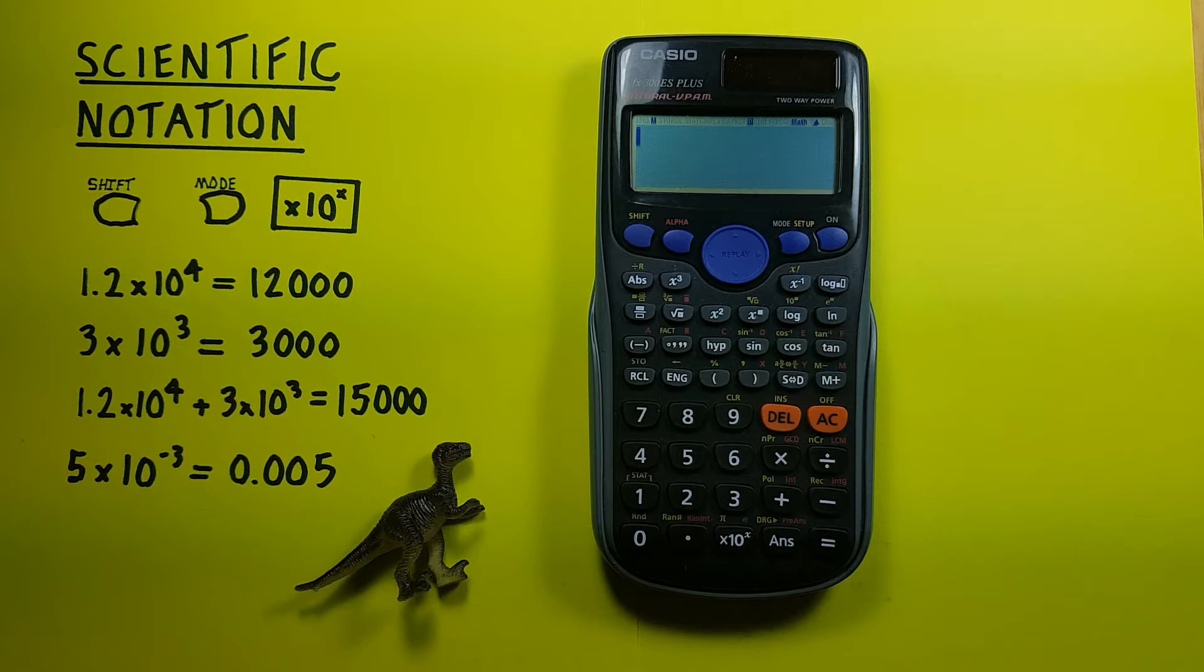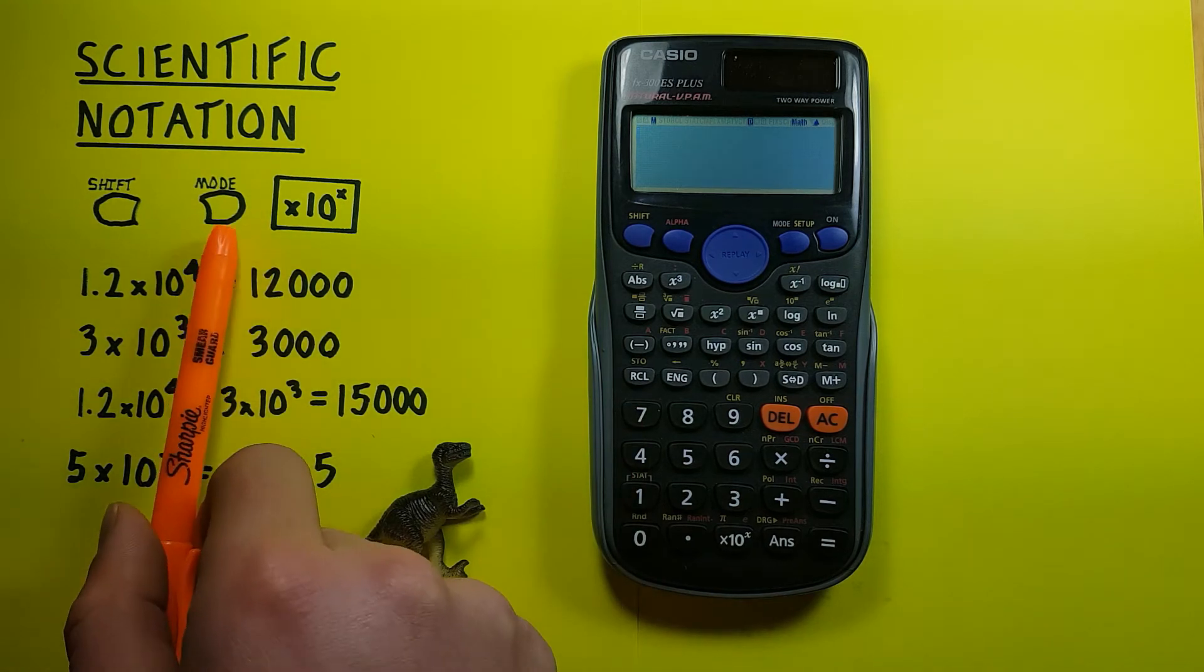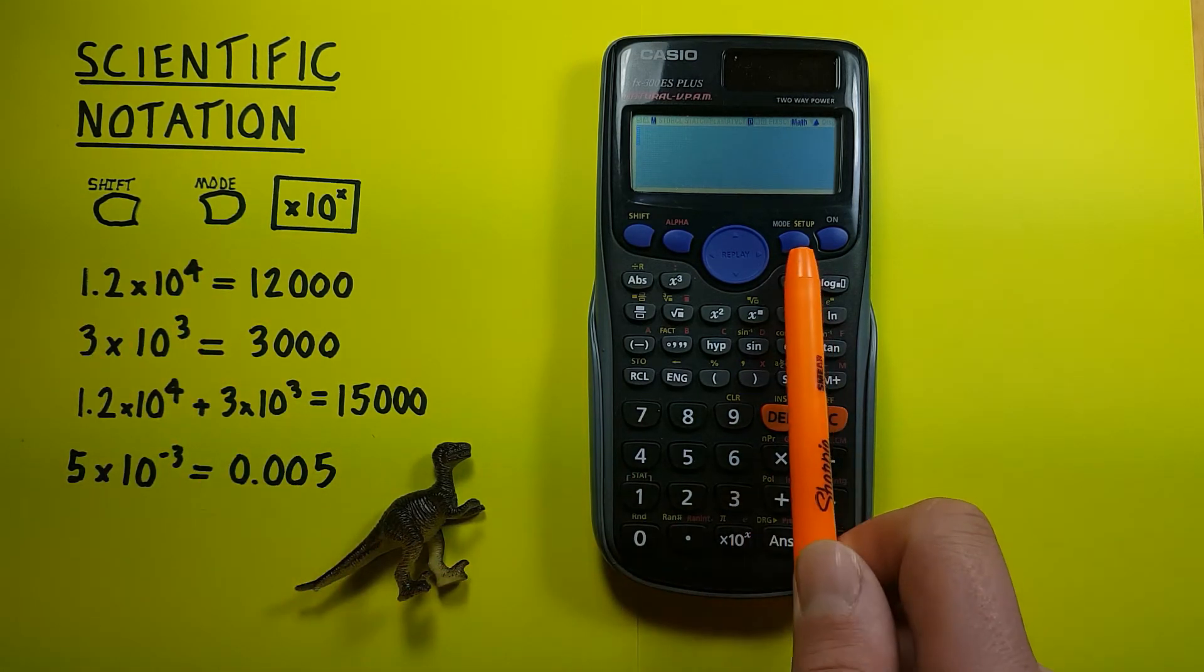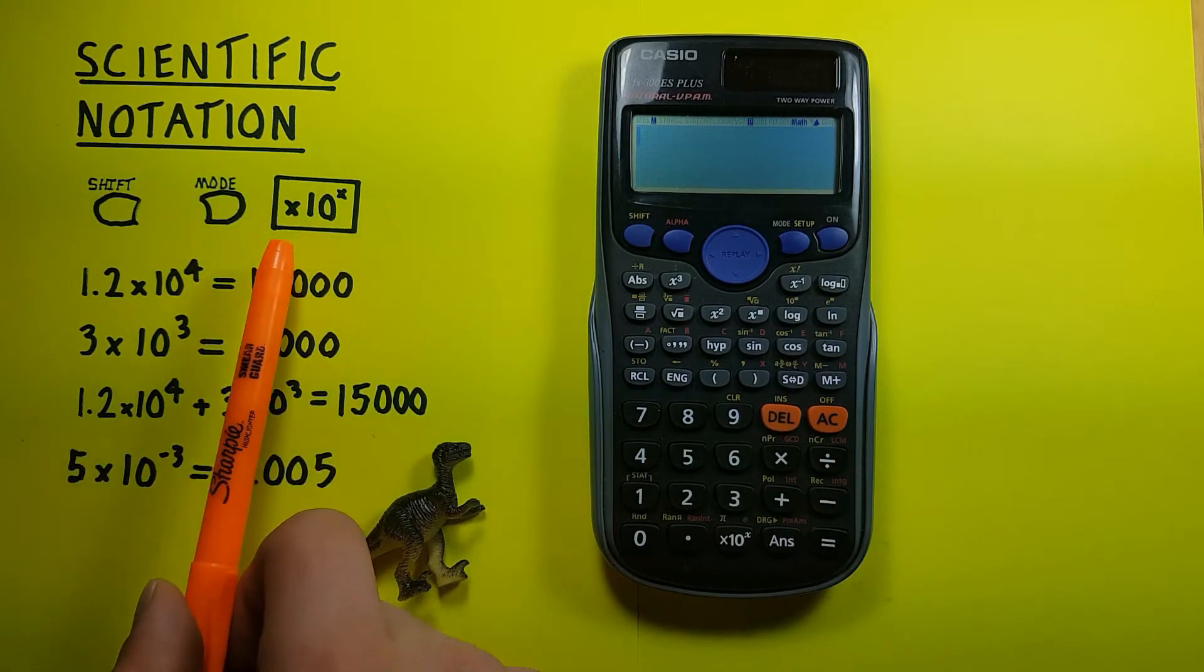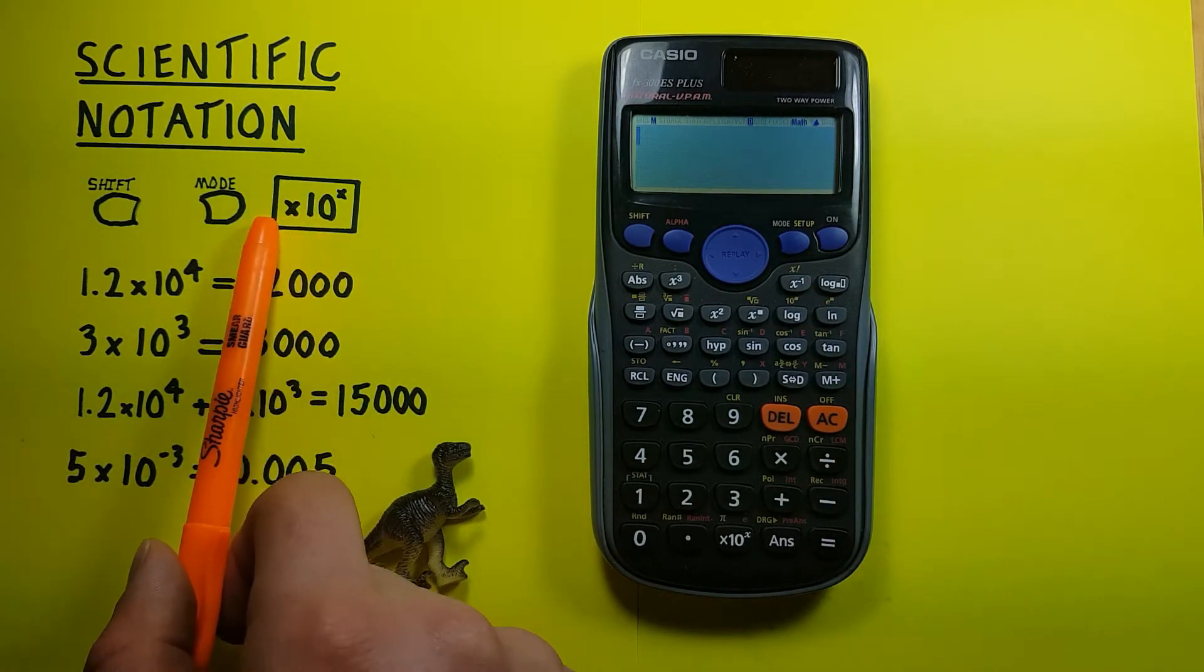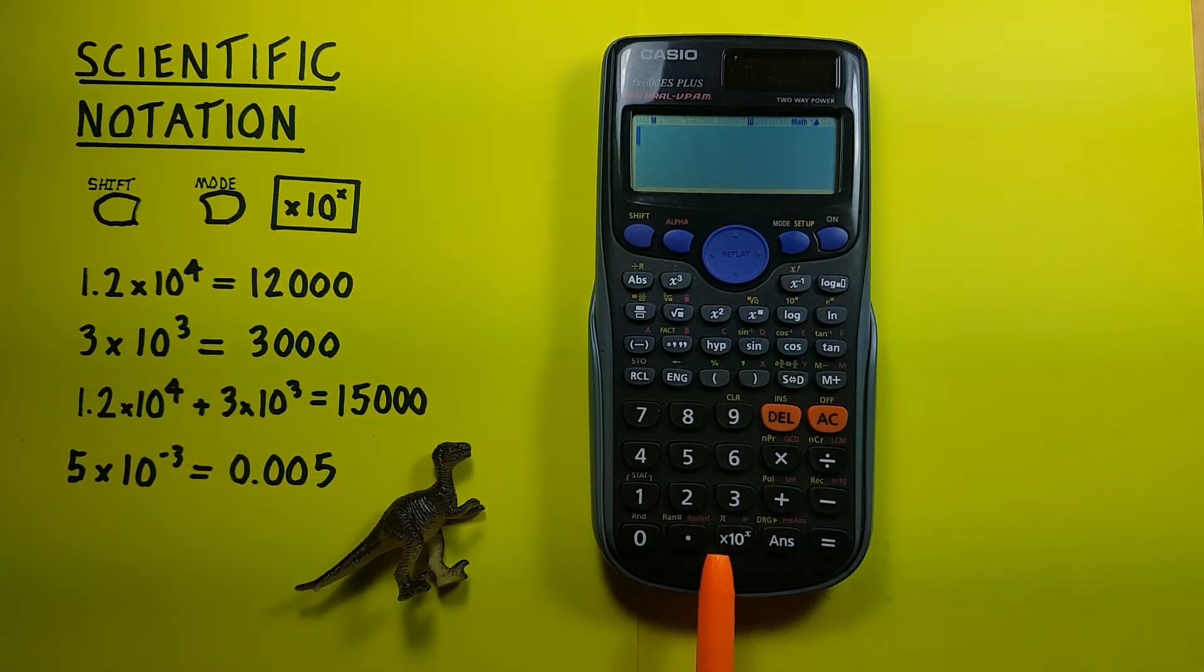To do this we'll be using the shift key, it looks like this, located here. The mode key looks like this, located here, and the times 10 to the power key that looks like this, and is located down here.